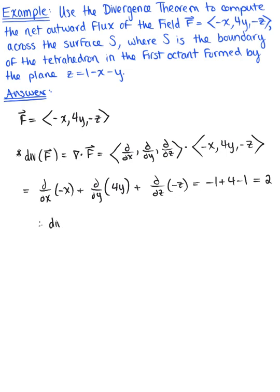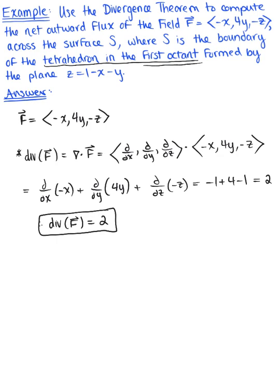We have a constant divergence of 2 for our vector field. Now let's think about what our solid region D is. Our solid region is a tetrahedron in the first octant, bounded by the coordinate planes — the x, y, and z planes — as well as the plane z equals 1 minus x minus y. We don't have a simple geometric formula for this, but we can easily find the bounds.